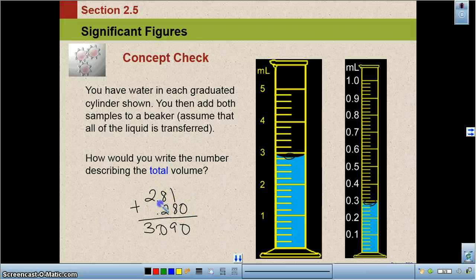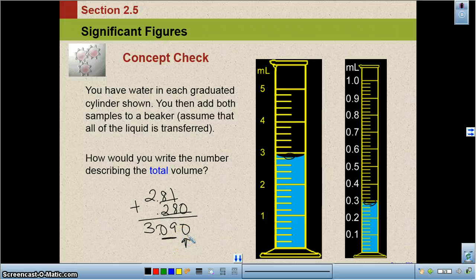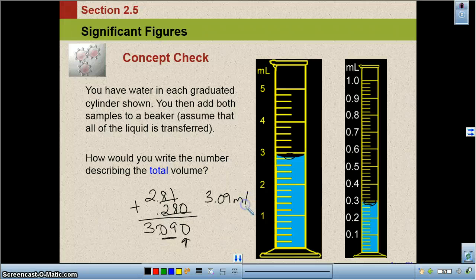Now I'm adding. So the rule says that I can only keep the number of places past the decimal that it has the least number past the decimal. I have two here. I have three here. So I can only keep two in my answer. So I can only keep these two positions. And the way I estimated it, I look at this position and say it's a zero. So I'm going to leave this as a nine. And my final answer is going to be a total of 3.09 milliliters.